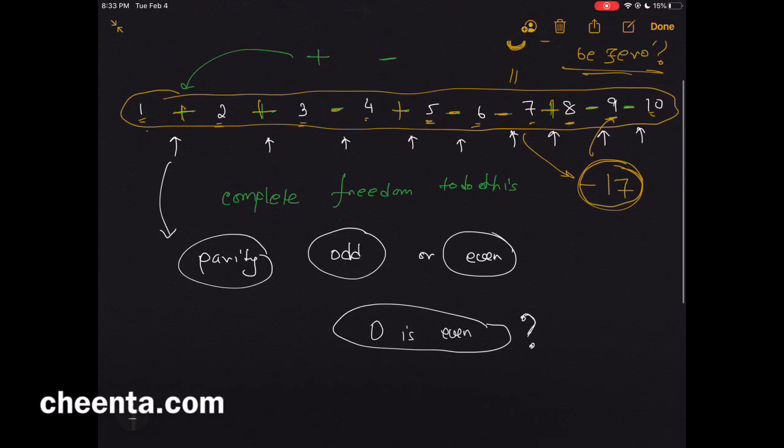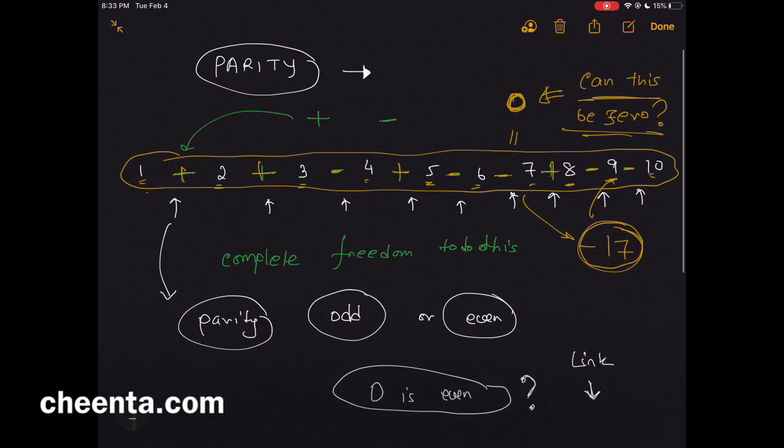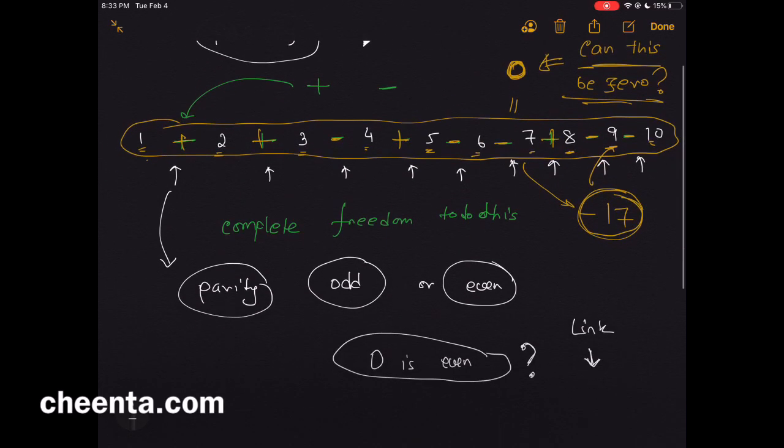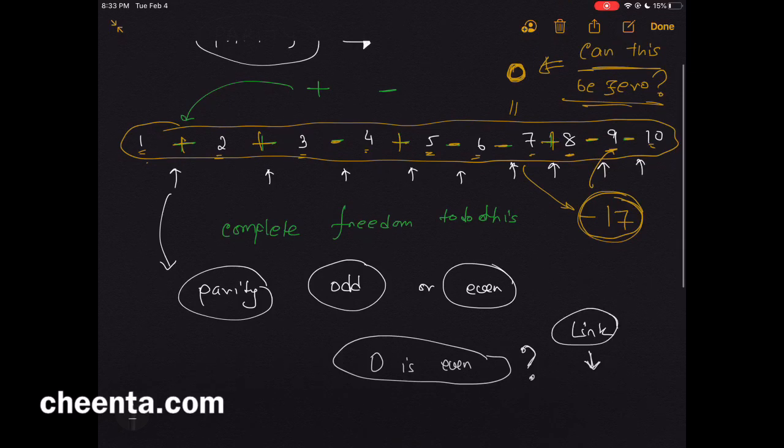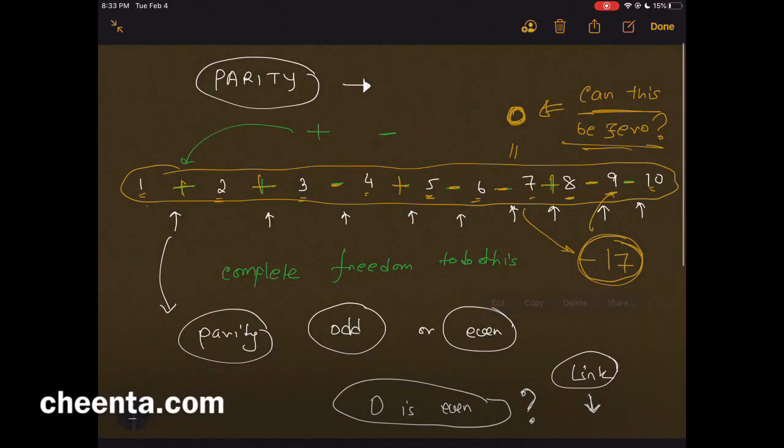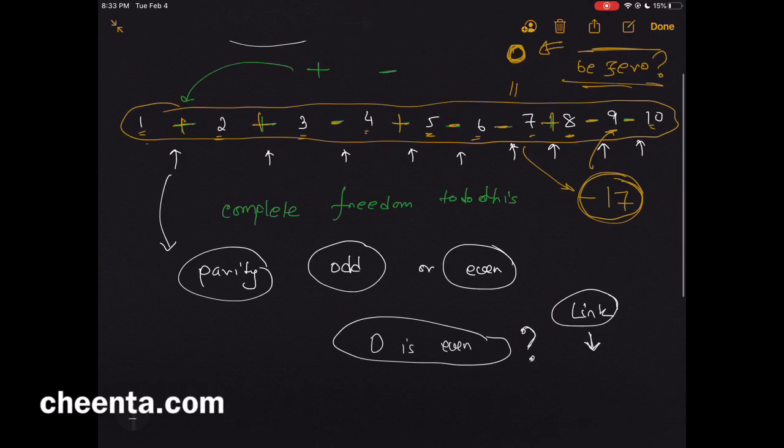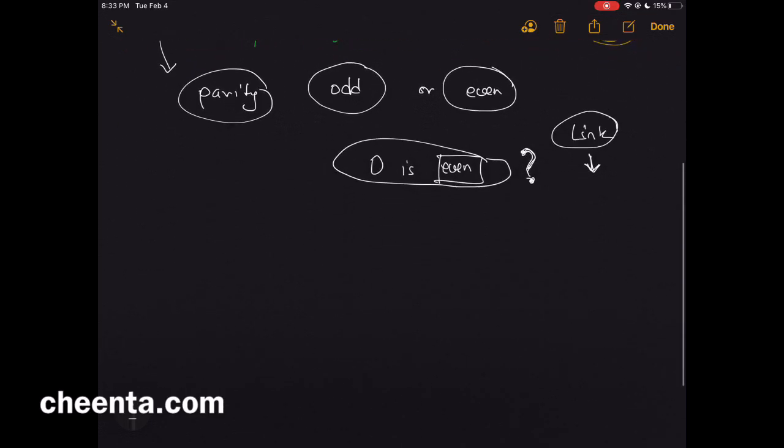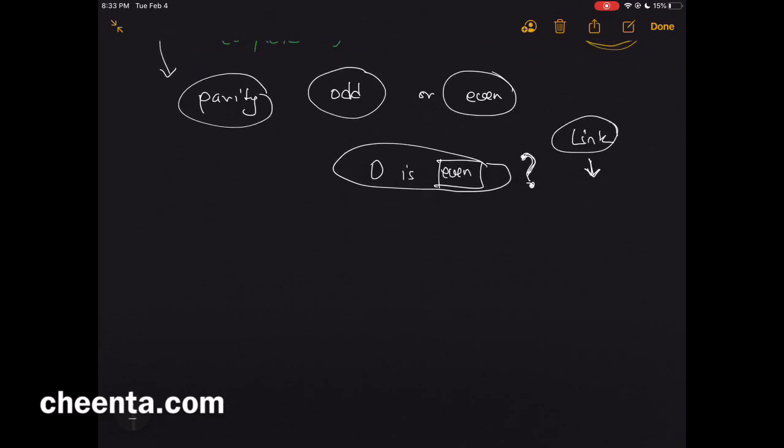And zero is even. Can you ever think about this question: why is zero even? Can you give an argument for that? A link in the description will take you to the main page of this particular discussion, which has this and several other problems which you can try. Please click on the link and try those things to master this idea. So zero is even, and you have to think why.